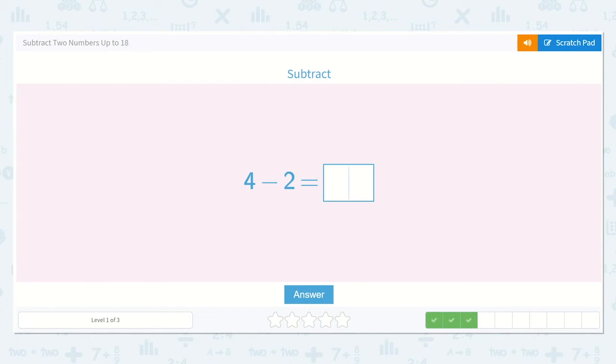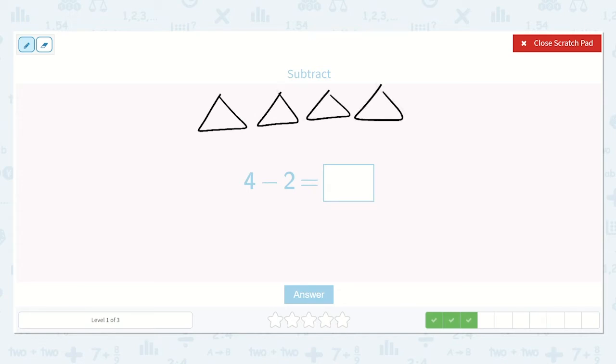Alright, we have that same one again, 4 minus 2. Let's show it with a different symbol. I'm going to draw some triangles: 1, 2, 3, 4 triangles. And we can either cross them off or we can pretend we're giving them away. So if we were to give this one away to someone and give this one away to someone, we would have this many left. How many is that? Yes, 2. Good.